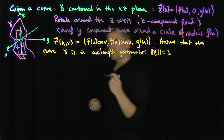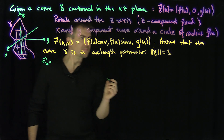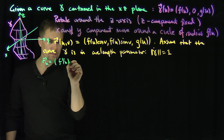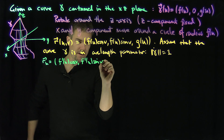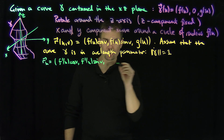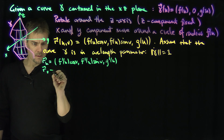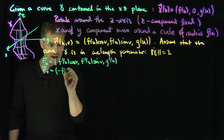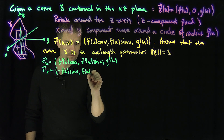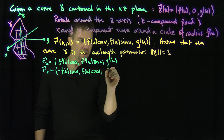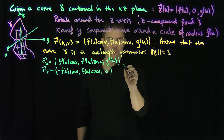Let's do some calculations. So what's r_u going to be? r_u = (f'(u)cos(v), f'(u)sin(v), g'(u)). What's r_v going to be? It's going to be (-f(u)sin(v), f(u)cos(v), 0) — because there's no v in the last slot.